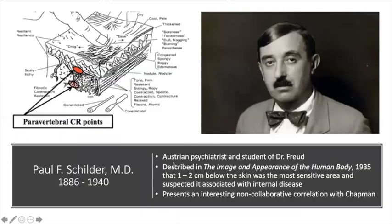I found an interesting correlation in a seminal work by Paul Schilder. Paul Schilder was an Austrian MD, a psychiatrist, and he wrote in his seminal work The Image and Appearance of the Human Body in 1935. Interestingly, he was not working with Frank Chapman, but he also found that one to two centimeters below the skin there was an area he described as most sensitive, and he suspected it was involved with internal disease. I include Dr. Schilder because someone from the osteopathic world and someone from the traditional allopathic world were finding findings that, in a way, support each other while working in a non-collaborative correlation.